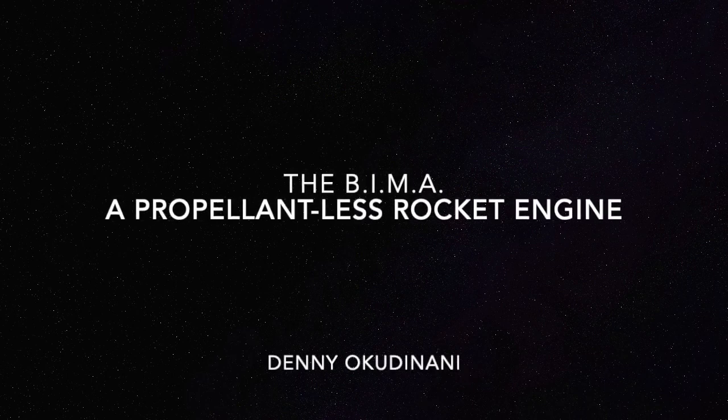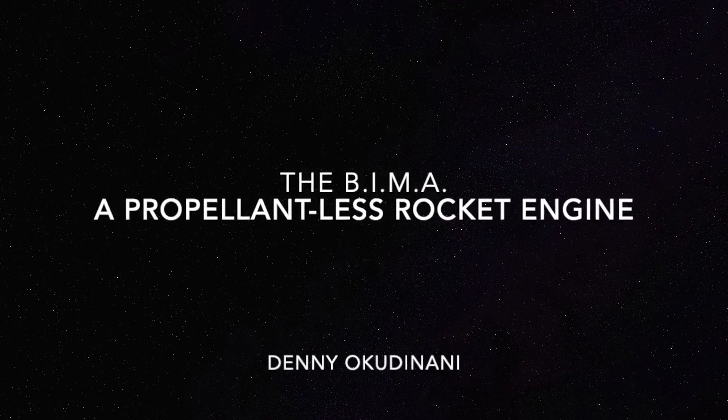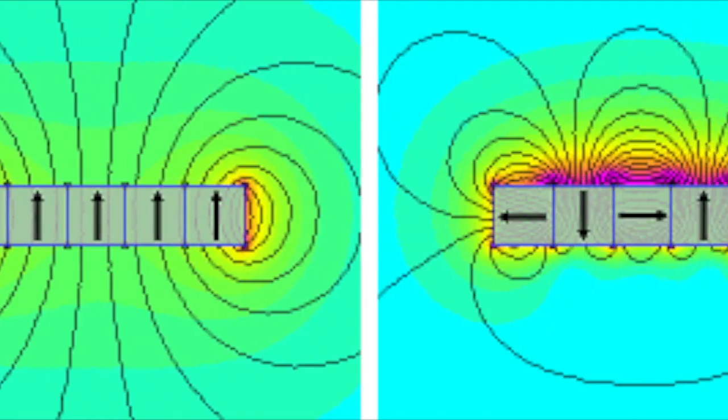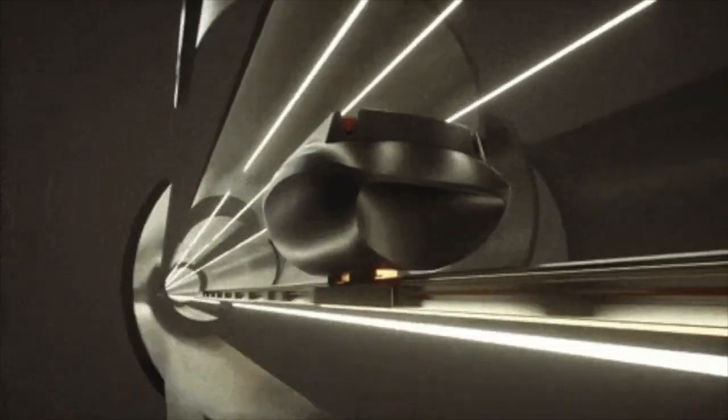Hello, my name is Denny Okudnani and I'm an inventor for the Genspiration Prize competition. When I was in community college, we did research on Hallbach arrays to see if we could increase the efficiency of certain systems for maglev.